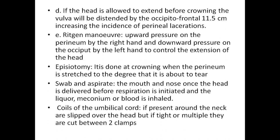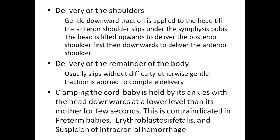Swab and aspirate the mouth and nose once the head is delivered, before respiration is initiated, if liquor, meconium or blood is present. Coils of the umbilical cord around the neck are slipped over the head; if tight or multiple, they are cut between two clamps. During delivery of the shoulders, general downward traction is applied to the head until the anterior shoulder slips under the symphysis pubis; the head is then lifted upward to deliver the posterior shoulder, and then downwards to deliver the anterior shoulder. Delivery of the rest of the body usually follows without difficulty.